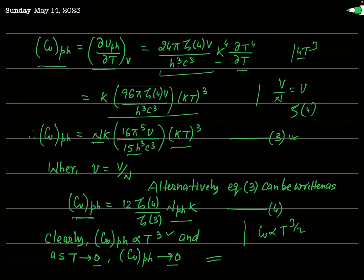This is only the contribution of phonons. In the next lecture, we will calculate the value of Cv due to the contribution of rotons. Then we will add these two values to get the total Cv. When we get the total Cv, you will again find that the total Cv will be proportional to T³. Thank you very much.